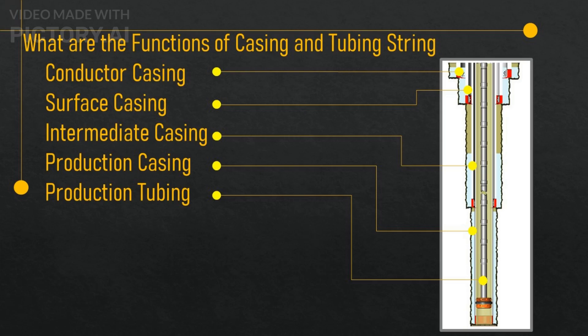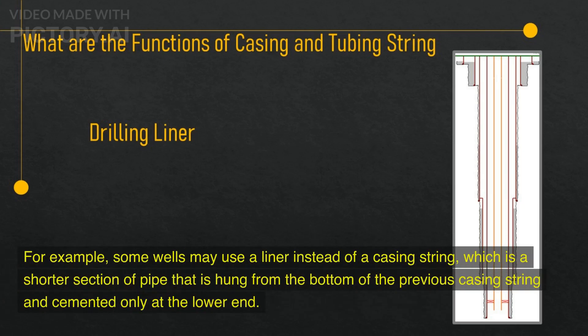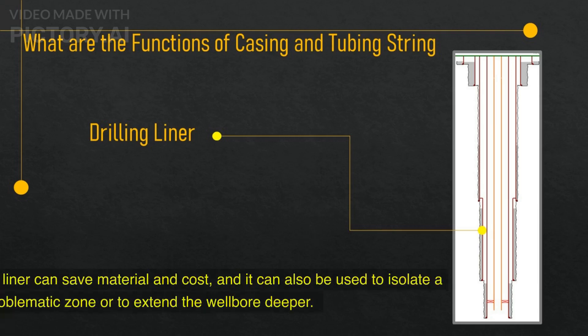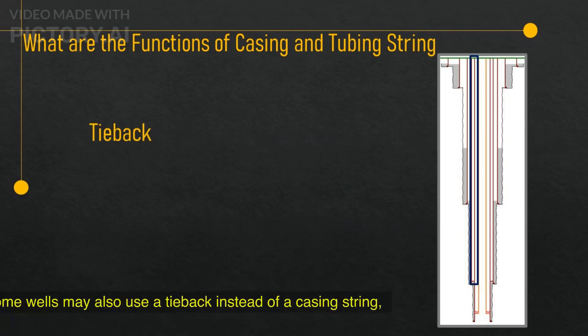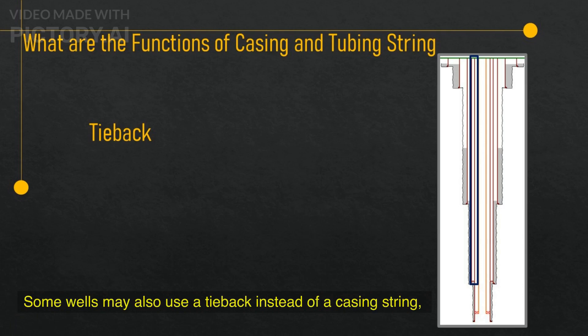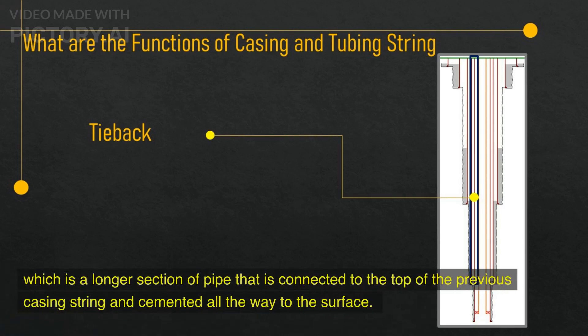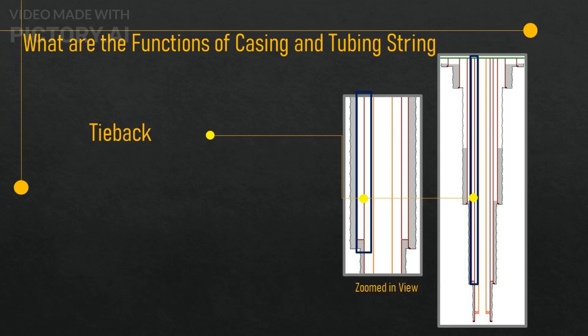These are the main types and functions of casing and tubing strings in a well, but there are also some variations and alternatives that can be used in certain situations. For example, some wells may use a liner instead of a casing string, which is a shorter section of pipe that is hung from the bottom of the previous casing string and cemented only at the lower end. A liner can save material and cost, and it can also be used to isolate a problematic zone or to extend the wellbore deeper. Some wells may also use a tieback, which is a longer section of pipe connected to the top of the previous casing string and cemented all the way to the surface, providing additional pressure integrity and support for the wellhead equipment.